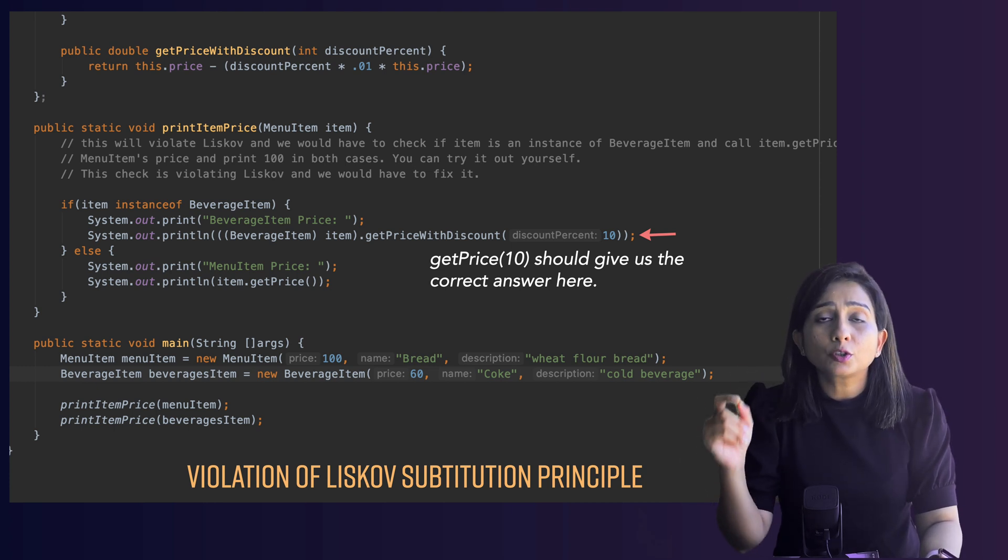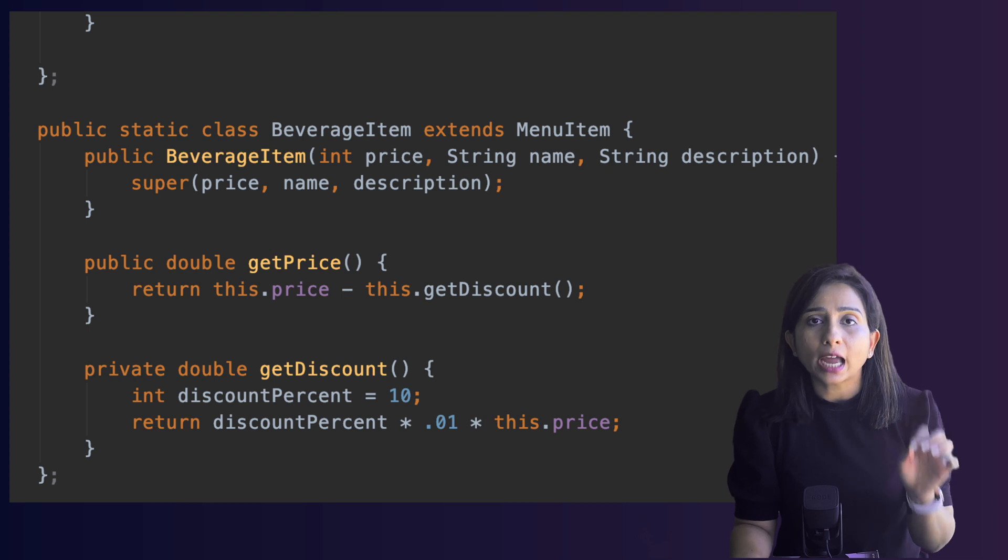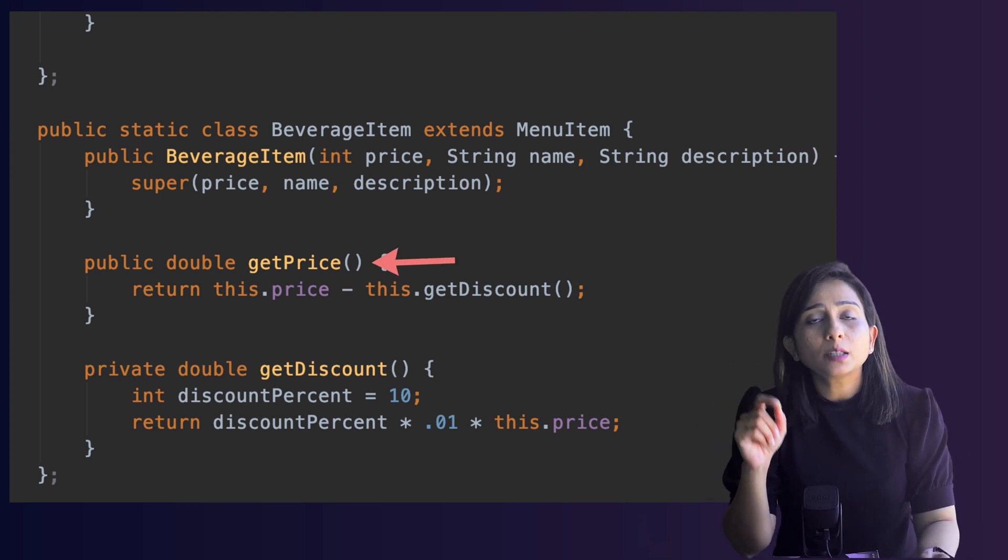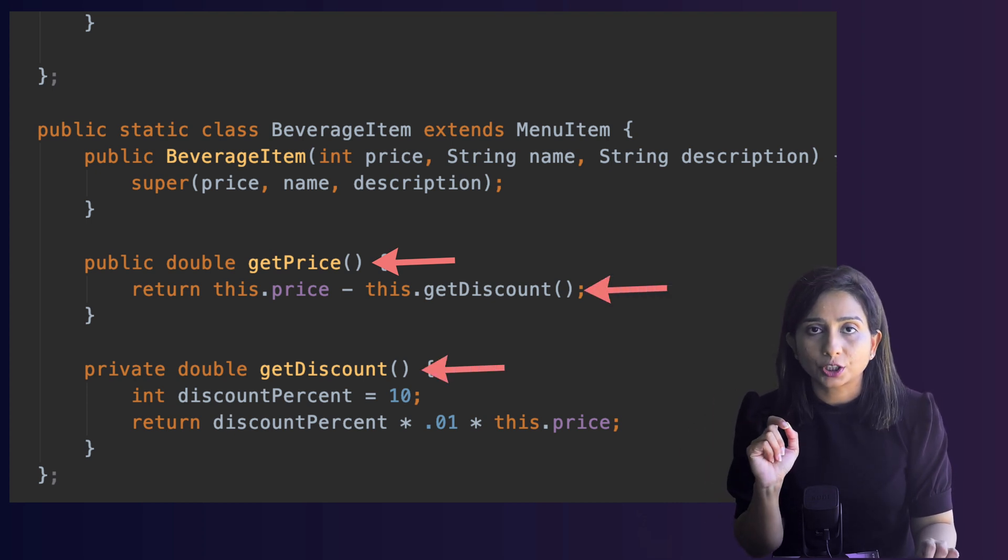You should be able to follow the same functionality without changing the way you are calling the functions. Now this leads us to a hint that we should have a function getPrice in the BeverageItem class which actually calculates the discount. This seems very straightforward. Now in BeverageItem class we will have a function getPrice and inside that function we can have the discount calculation.